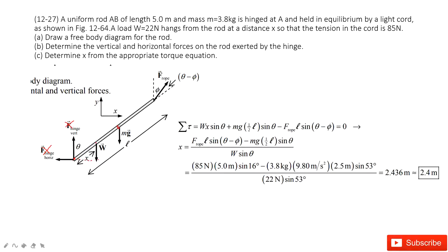For F_rope, we project it into X and Y components to find the perpendicular distance from the rotation axis. The effective torque arm for F_rope is L·sin(θ − φ), giving a torque of F_rope·sin(θ − φ). We write the torque equation setting the net torque equal to zero, which gives us a function for X. Inputting the known quantities, we get the final answer.